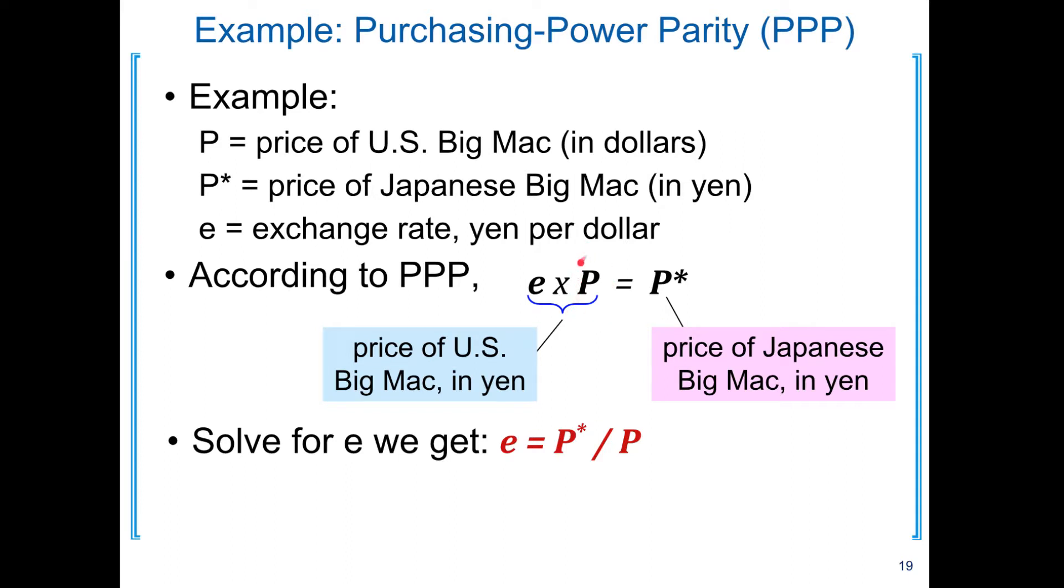When we convert P dollar into Japanese Yen, we simply multiply it by the conversion rate or exchange rate E. So according to law of one price or PPP, the price of Big Mac in US when measured in Yen should be equal to the price of Big Mac in Japan measured in Yen.